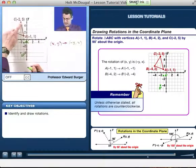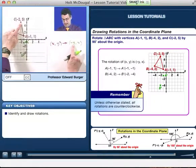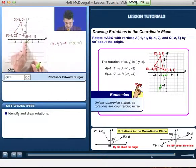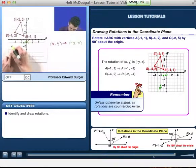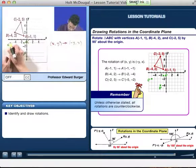And what about C? Well, under this map, negative 2, 5 goes to negative 5, negative 2. Negative 5, negative 2 is right here. That's C prime.